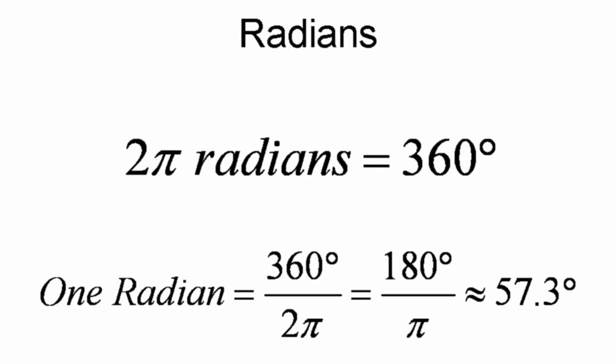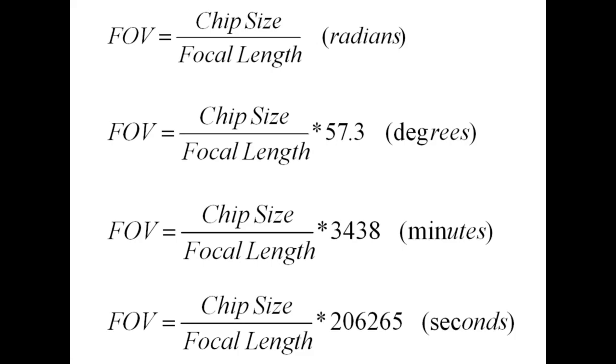Earlier I said that this formula gives you the field of view in radians. There are 2π radians in 360 degrees, or one radian is 180 divided by π, which is approximately 57.3 degrees. We also know that there are 60 arc minutes in a degree and 60 arc seconds in an arc minute. So if we want the answer in degrees, we multiply by 57.3. If we want the answer in arc minutes, we multiply by 57.3 and 60. If we want the answer in arc seconds, we multiply by 57.3 and 60 and 60 again.